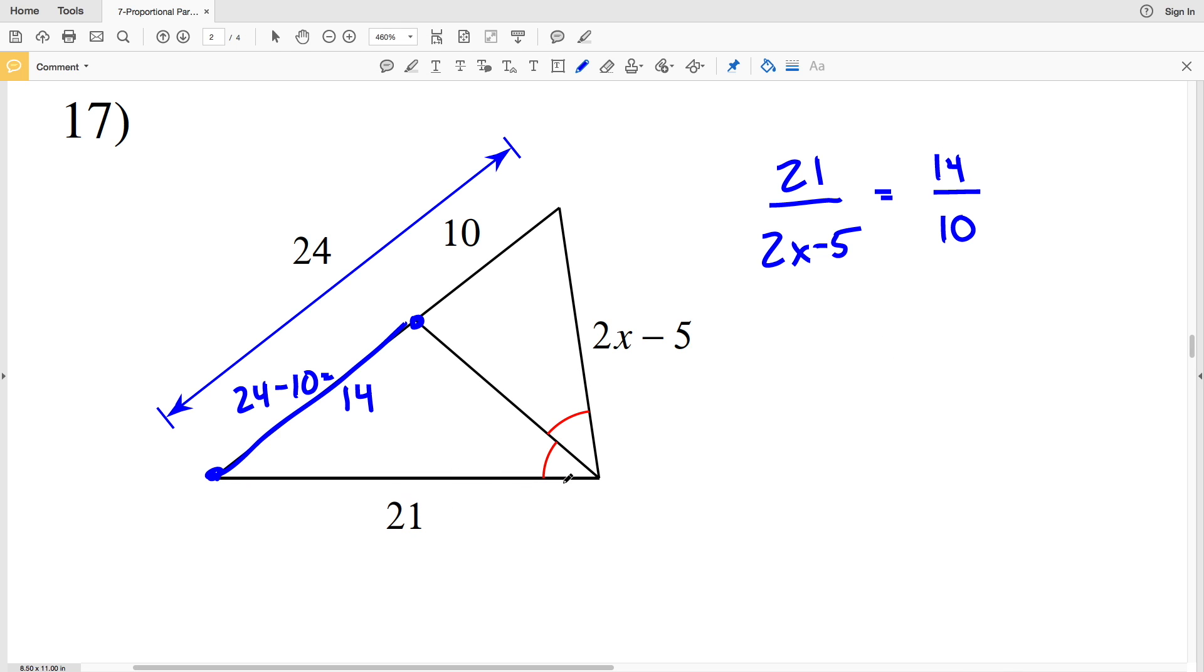And a way to remember what side to put on top: the numerators, so 21 and 14, will connect to form an angle of the triangle that's not the congruent angles. And the denominators will connect to form the other angle of the triangle that's not the congruent angles. So the numerators will come together to form an angle that's not the congruent angles, and the denominators will come together to form the angle that's not the congruent angles.